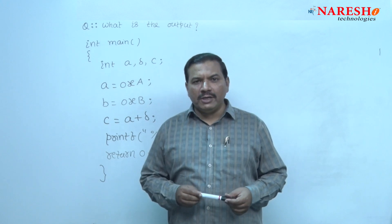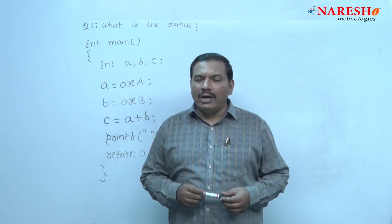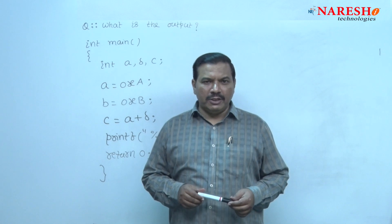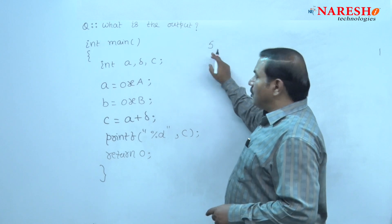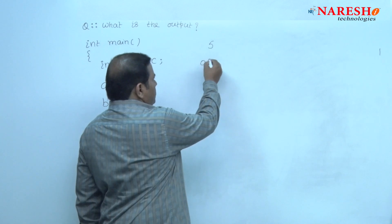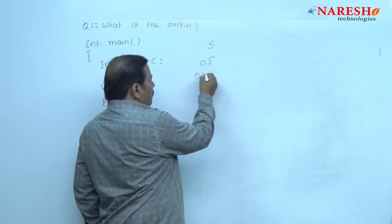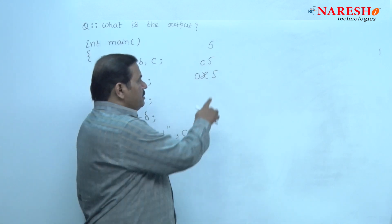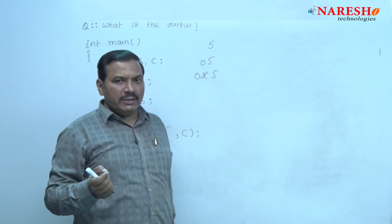there are three types of integer constants. One, decimal integer constants. Number two, octal integer constants. Number three, hexadecimal integer constants. For example, 5 is called a decimal integer constant. 05 is an octal integer constant. 0x5 is a hexadecimal integer constant. An integer constant preceded with 0x is called a hexadecimal integer constant.